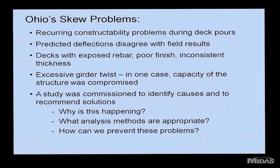The problems ODOT was experiencing were mostly related to deck pours. They were finding that the deflections predicted in the plans were often wrong, leading to incorrect screed elevations, which in turn led to poor finishes and inconsistent thicknesses in the decks. Another problem was excessive twisting of the girders, especially in heavily skewed structures, which in one case led to replacement of a structure after only a few years of service. The questions they wanted addressed were: why is this happening, what analysis methods can predict this behavior, and how can we prevent it in the future?